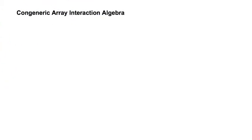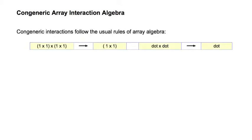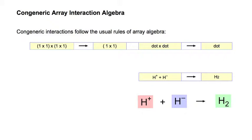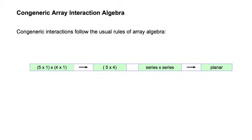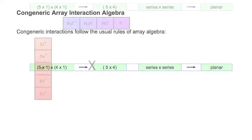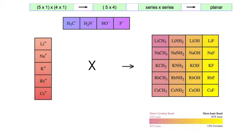We can also carry out congeneric array interaction algebra. A 1×1 array times a 1×1 array gives a 1×1 array — from simple matrix arithmetic. In our analysis, a dot times a dot gives a dot: H+, which is congenerically unique, plus H−, which is congenerically unique, gives hydrogen H2, which is also congenerically unique. Another example: a 5×1 series times a 4×1 series gives a planar. If we take the group 1 cations and react those with the period 2 anions, we get an array of salts ranging from methyl lithium to cesium fluoride, with regular changes in structure and chemical behaviour up, down, across, and diagonally.